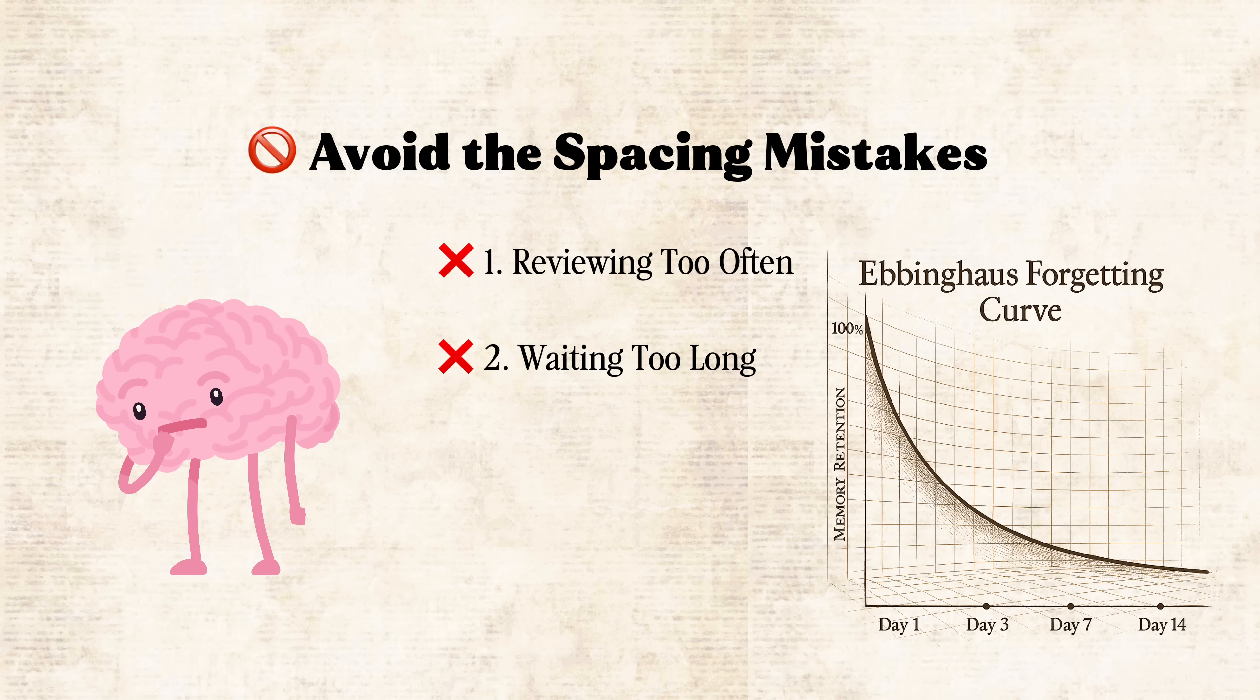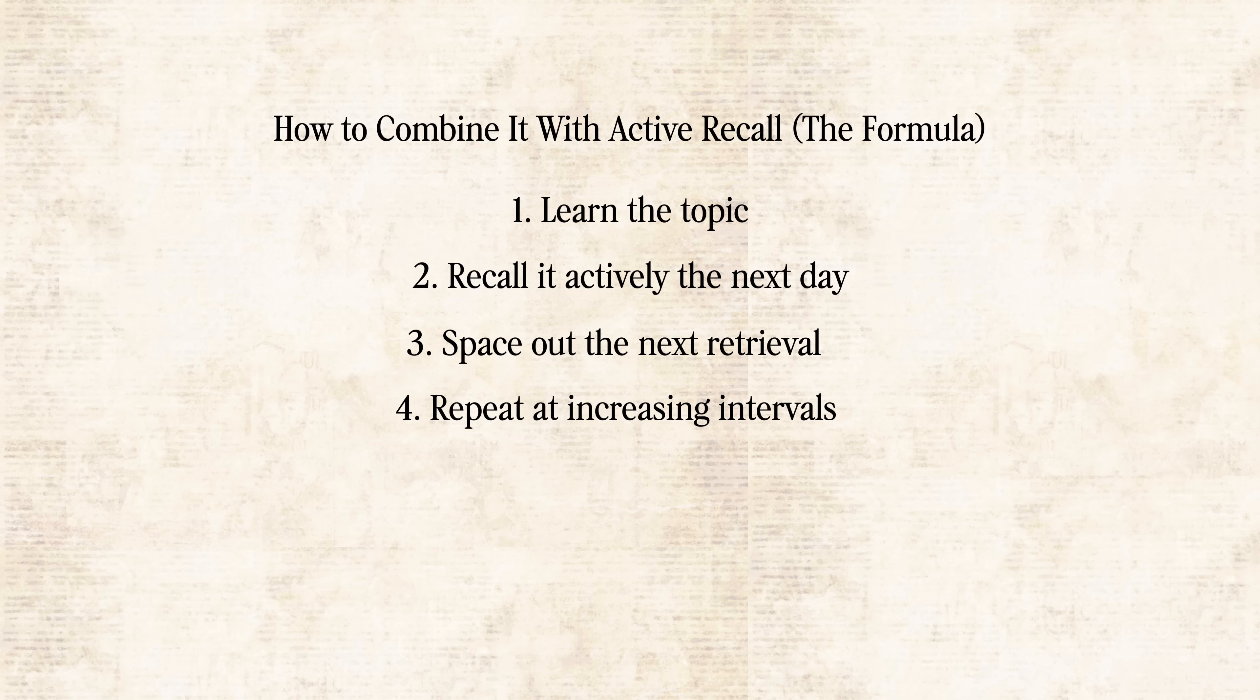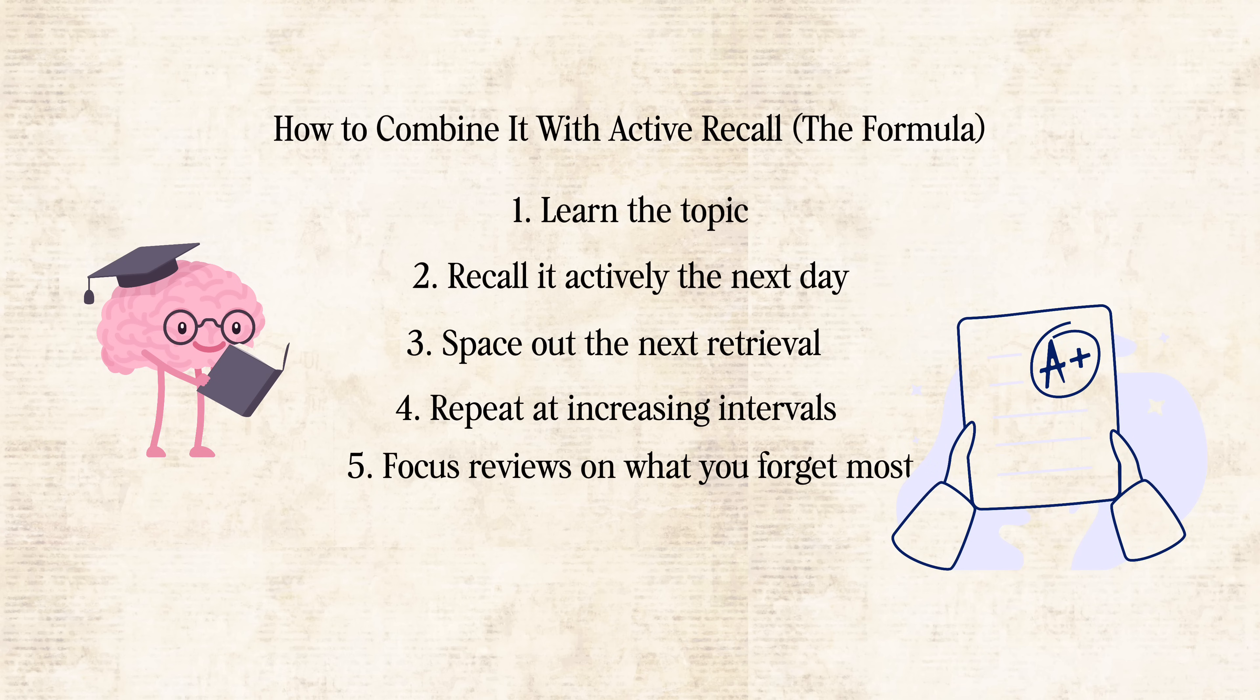How to combine it with active recall. The formula. Here's how the system works together. Learn the topic. Recall it actively the next day. Space out the next retrieval. Repeat at increasing intervals. Focus reviews on what you forget most. It's not magic. It's not a hack. It's just how your brain was built to learn. Through challenge, repetition, and time.